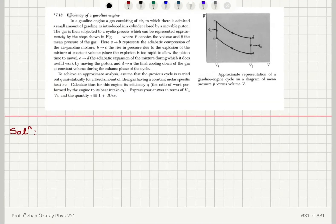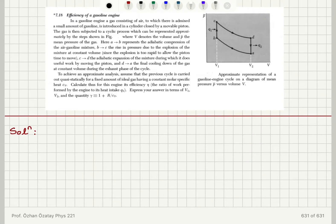Efficiency of a gasoline engine. In a gasoline engine, a gas consisting of air to which there is admixed a small amount of gasoline is introduced in a cylinder closed by a movable piston. The gas is then subject to a cyclic process, which can be represented approximately by the steps shown in this figure, where V denotes the volume and P-bar the mean pressure of the gas.